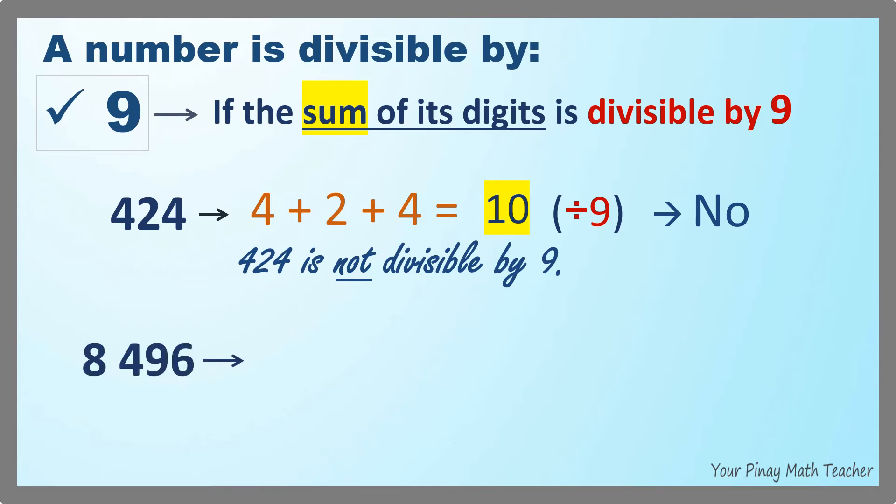How about 8,496? What is the sum of its digits: 8, 4, 9, and 6? Yes, it's 27. Is 27 divisible by 9? Is 27 in the times table of 9? Yes.